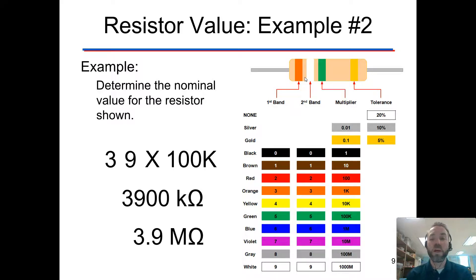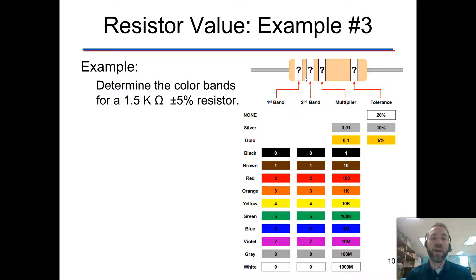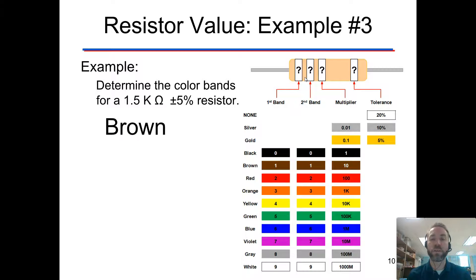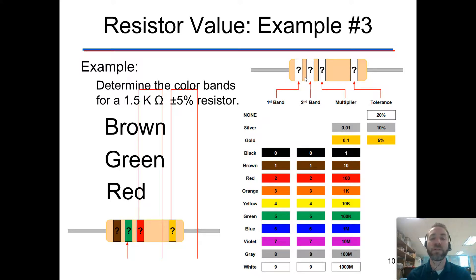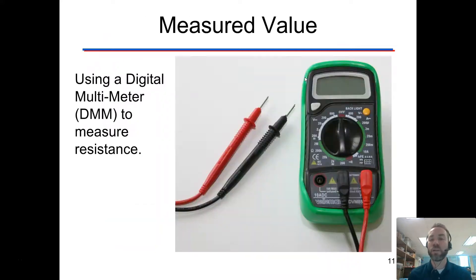We can also go the other way. So if we want a 1.5k resistor with five percent tolerance — plus or minus — we're going to want a one first, which is brown; a five second, which is green; and then what do we want for that third band? Red. So what we have is 1500 ohms of resistance — 1.5k — and that last band is of course gold.